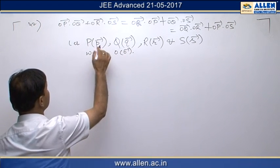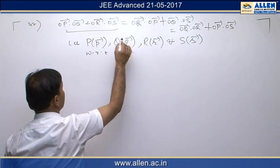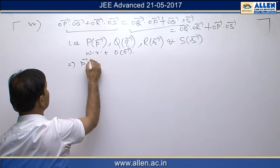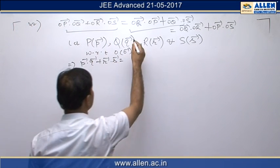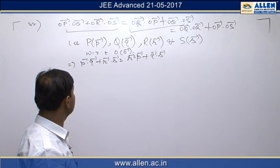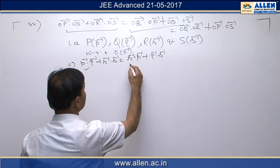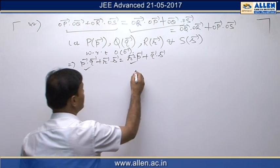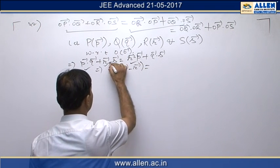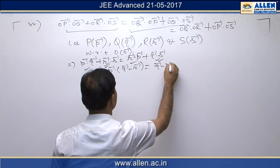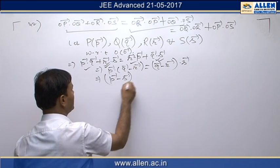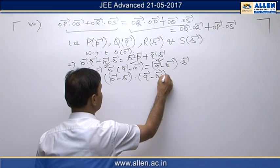Considering the first equality, we can write P·Q + R·S = R·P + Q·S. Rearranging terms and transferring to the left side, we get P·Q - R·Q - R·S, which simplifies to (P vector - S vector)·(Q vector - R vector) = 0.